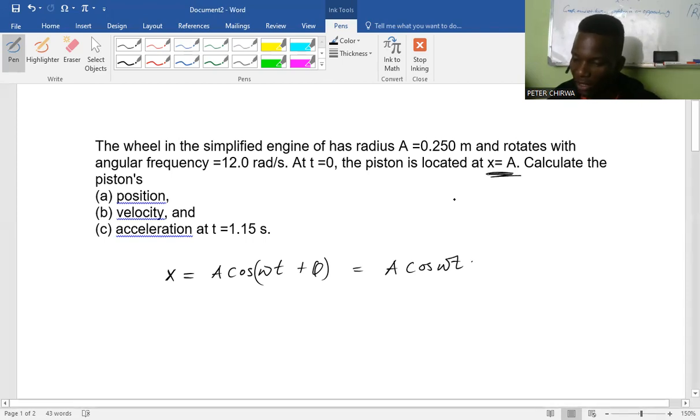We can even prove this statement to say at time equal to zero, we have x being equal to amplitude. So at time equal to zero, you have amplitude times cos, whatever we're going to multiply here times zero, we'll get zero. And we'll get amplitude cos zero, which cos zero gives us one. So at x equal to zero in terms of time, we have the position being equal to the amplitude.